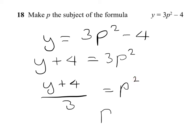I'm also going to write p on the left-hand side. It makes no difference swapping it around. So y plus 4 over 3, and make sure you put the square roots on there. And that's the problem solved.